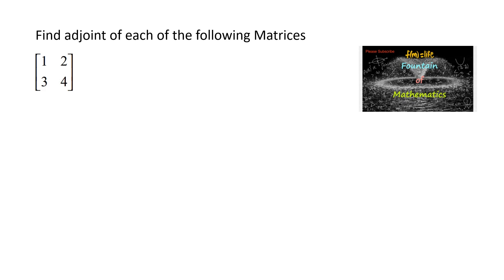Find the adjoint of each of the following matrices. A 2 by 2 matrix is given. Let us consider A is equal to matrix 1, 2, 3, 4.